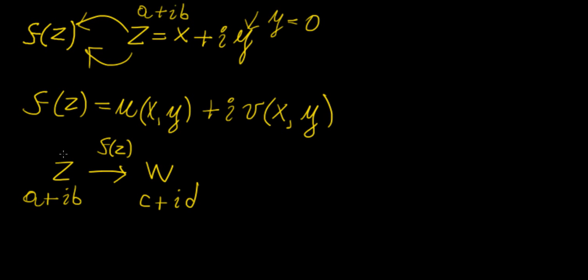You have a function of a complex number, it inputs a complex number, and then it outputs another complex number. And that's essentially the way it works.